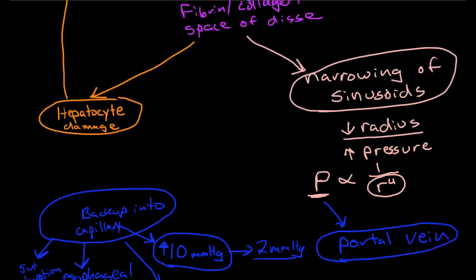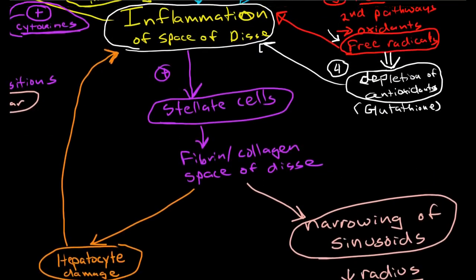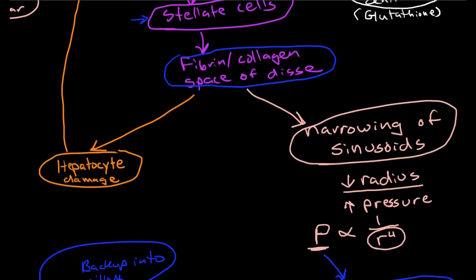So again, we've got inflammation of the space of Disse that causes the stellate cells to deposit scar tissue in the space of Disse. And that narrows the sinusoids causing portal hypertension. And it also causes hepatocyte damage.